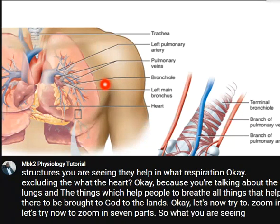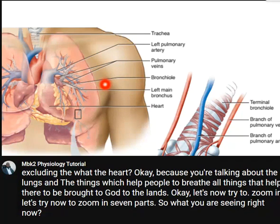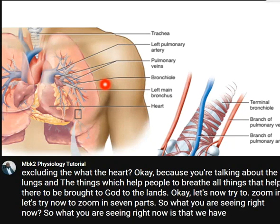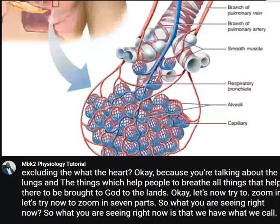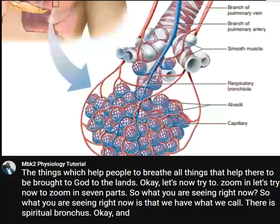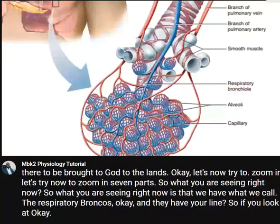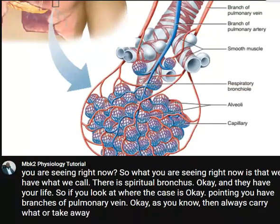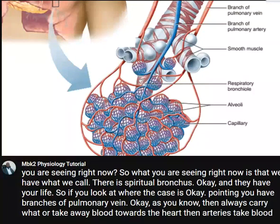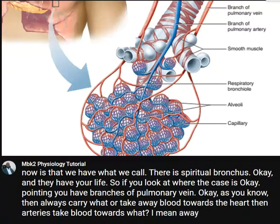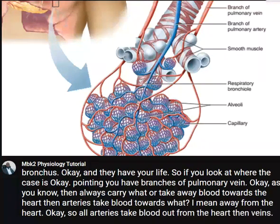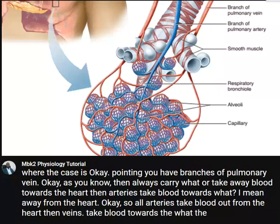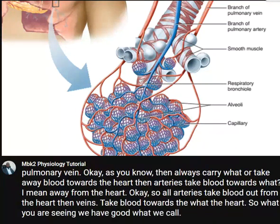What you are seeing right now is what we call the respiratory bronchioles and the alveoli. Where the cursor is pointing, you have branches of the pulmonary vein. As you know, veins carry blood towards the heart, while arteries take blood away from the heart. We also have what we call smooth muscles.